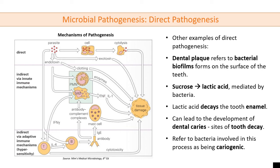We've covered the principle types of direct pathogenesis - the main ways microorganisms can induce disease symptoms in a host. There are also some various other and less prominent ways microorganisms can directly cause damage. One example is the ability of some bacteria to form biofilms on the teeth, where bacteria can potentially produce lactic acid, and this lactic acid can play a role in dental decay. Here the bacteria is directly causing pathology, but not through cytolysis or exotoxins - there's a third mechanism.